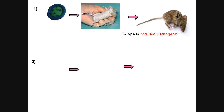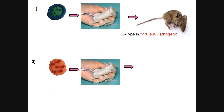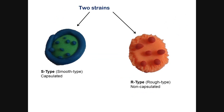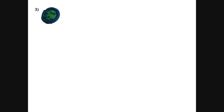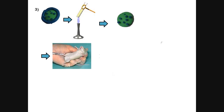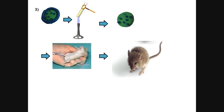First he took the S-type bacteria, injected it into mice, and observed that the mice died. This showed that the S-type is virulent or pathogenic and caused the mice to contract pneumonia. Secondly, he injected R-type bacteria into mice and the mice lived, concluding that the R-type is avirulent or non-pathogenic and does not cause pneumonia. Then he heated the living S-type bacteria, the capsule got dissolved, injected that into mice, and the mice lived.